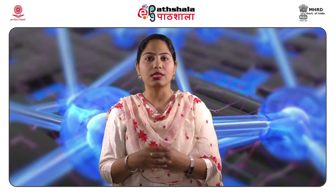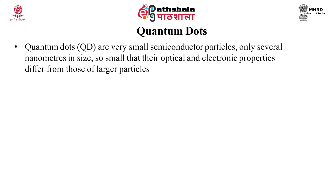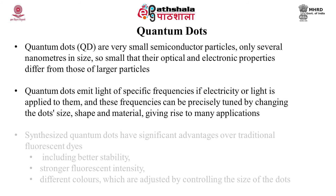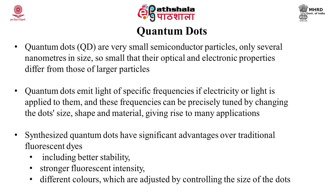The next nanomaterial we will discuss are quantum dots. Quantum dots are very small semiconductor particles, only several nanometers in size — so small that their optical and electronic properties differ from those of large particles. These quantum dots emit light of specific wavelengths or frequencies if electricity or light is applied to them, and these frequencies can be precisely tuned by changing the dot's size, shape, and material, giving rise to many applications.